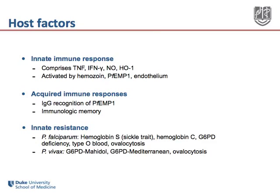Pathogenesis results not only from parasite factors, but also from host factors. These include, but are not limited to, innate immune responses, which are potently activated by hemozoin, PFEMP1, and endothelial activation. These comprise tumor necrosis factor, interferon gamma, nitric oxide, heme oxygenase 1, and a variety of other host-derived factors.